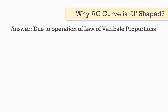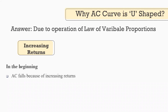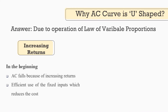Let's understand increasing returns first. In the beginning, average cost falls because of increasing returns. In that phase, we use the fixed inputs efficiently and therefore that reduces the cost. So as we increase the variable input, the average cost reduces because of the efficient use of the fixed inputs. And therefore, we get the downward sloping portion of the average cost curve.